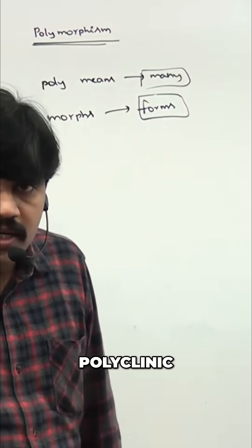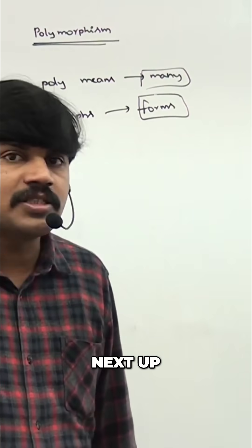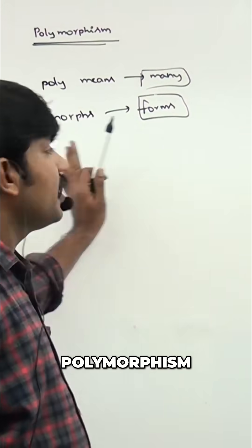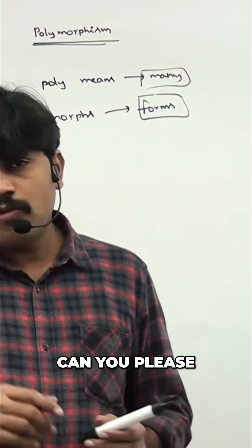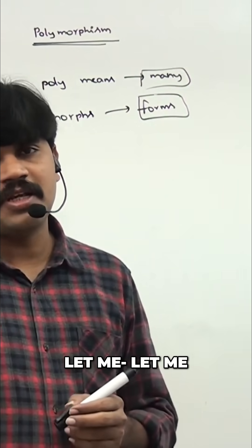Poly clinic, polygon - these poly techniques are by default considered as polymorphism. Right? Can you please understand this?